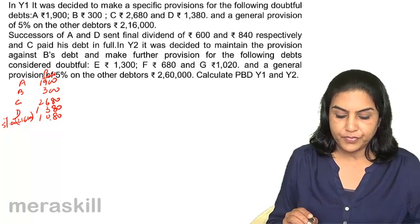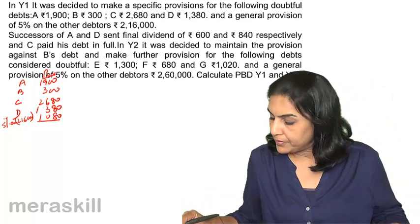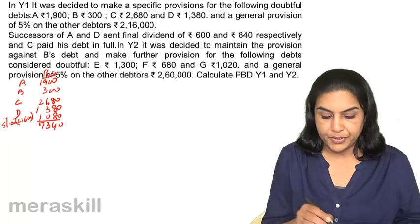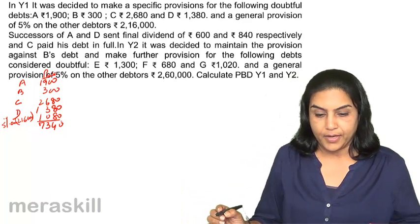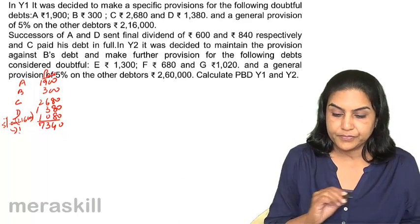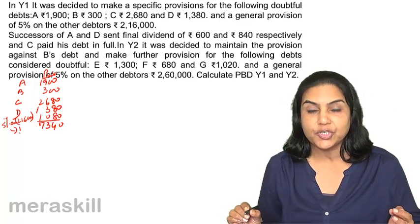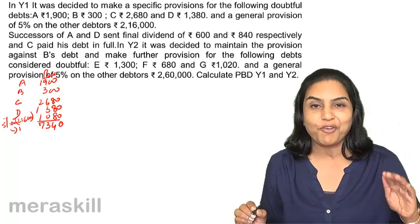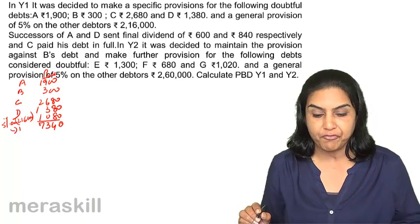The total provision for Year 1 comes to 7,340. The entry for creating this provision, assuming there was no provision before, is: Profit and Loss Account debit to Provision for Doubtful Debts — 7,340.